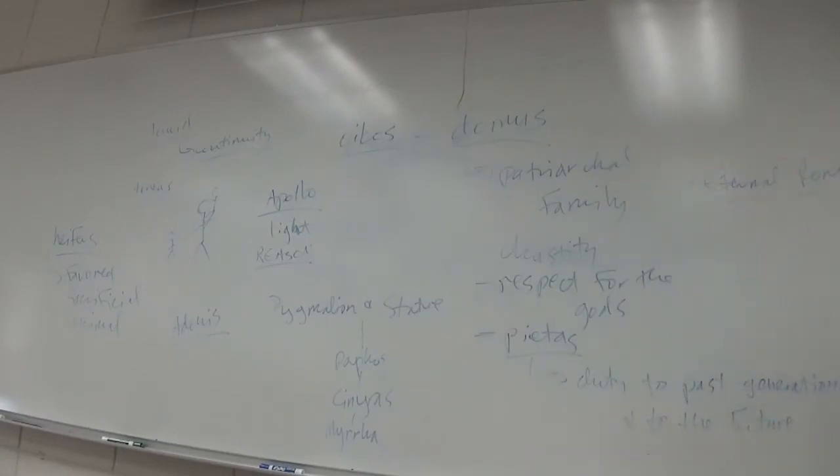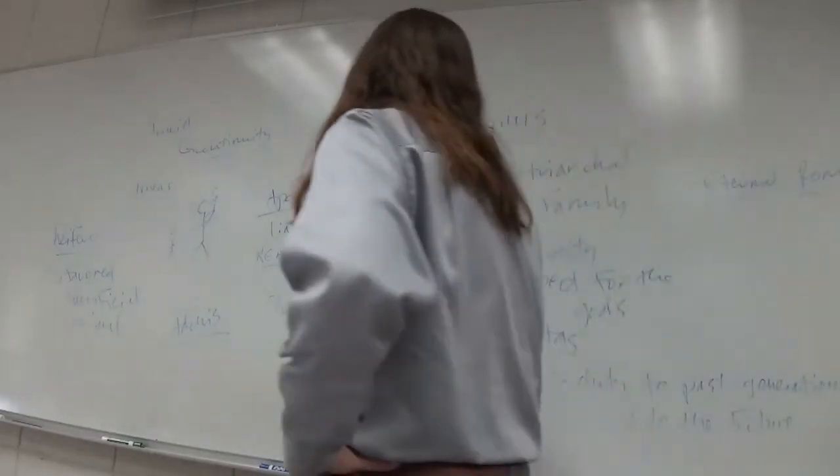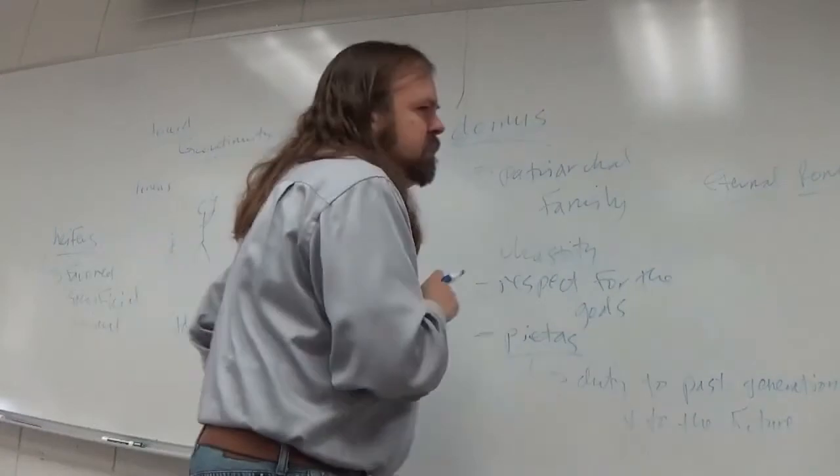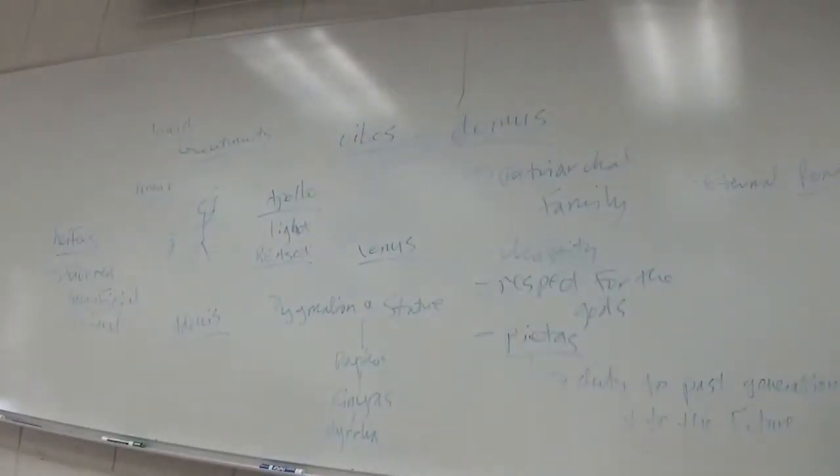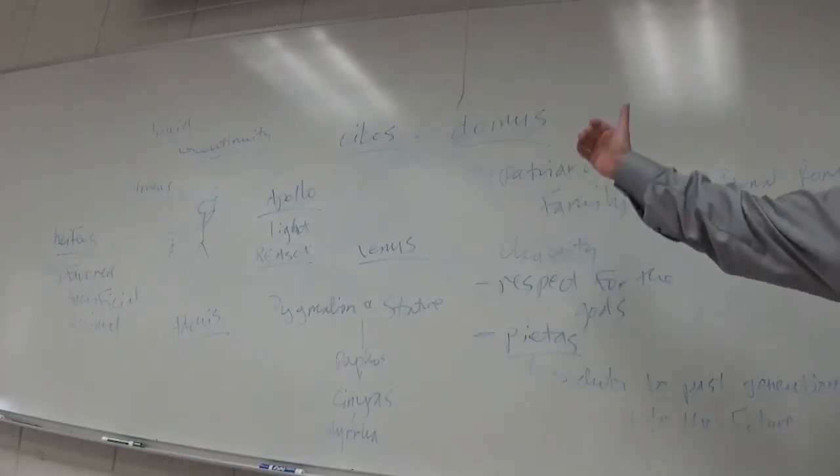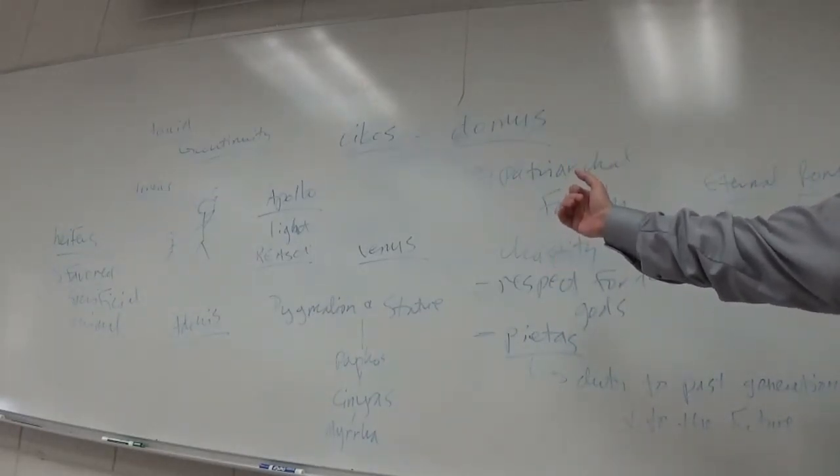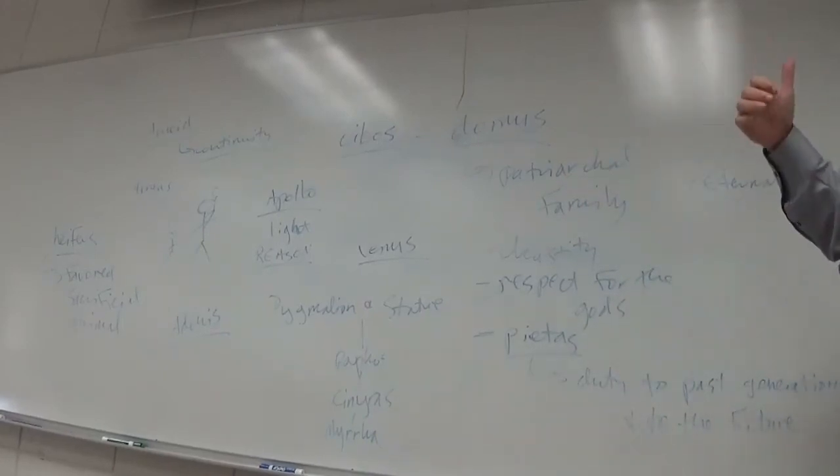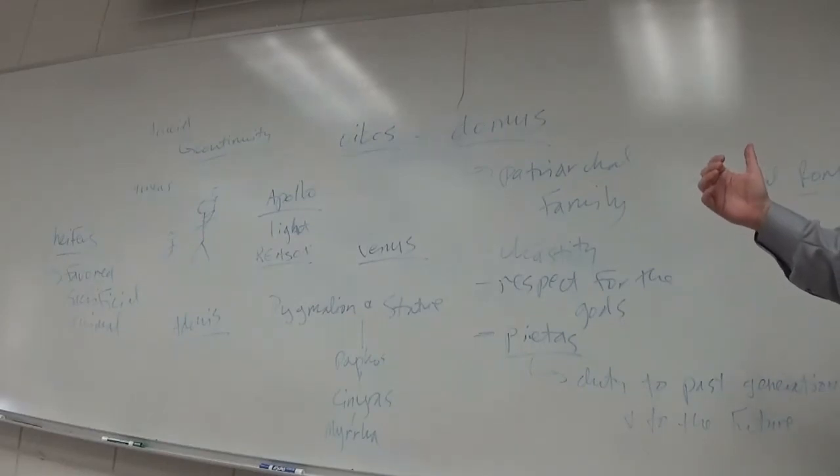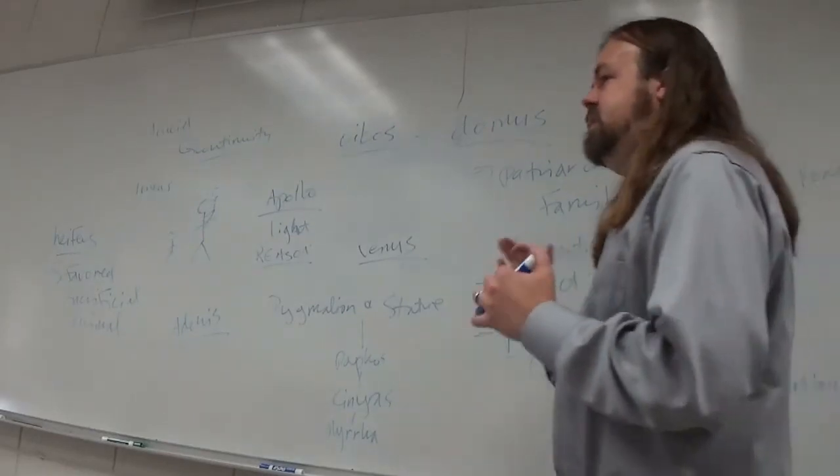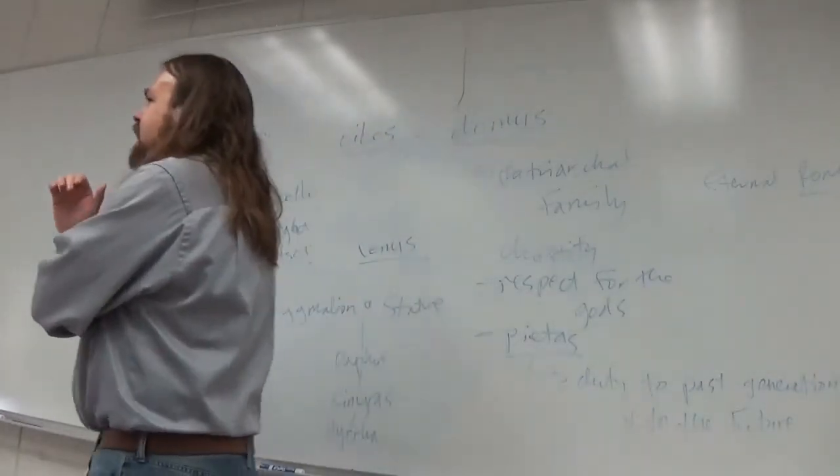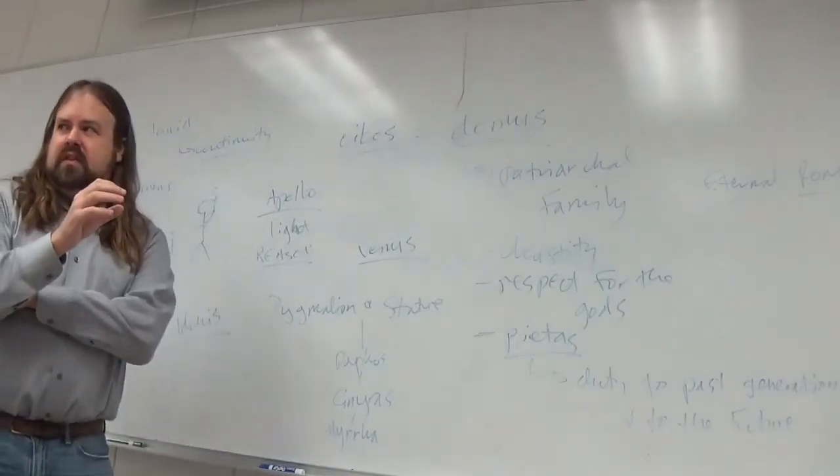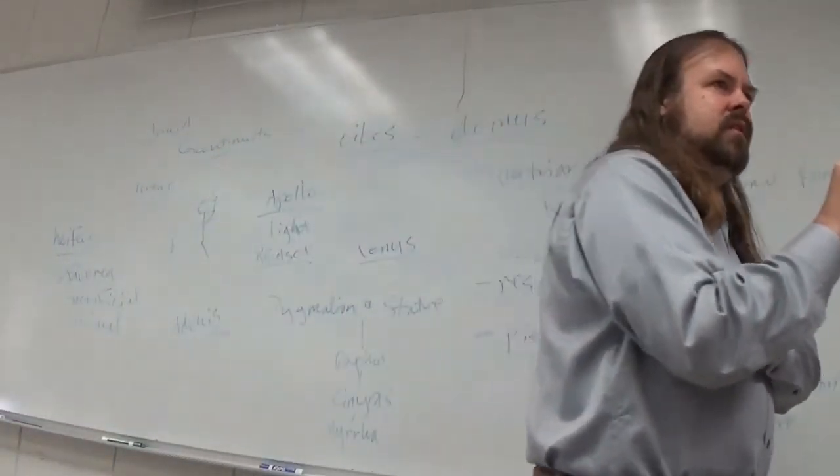And, ultimately, this is a rebuke to the goddess Venus herself. She made it happen, right? She gave Pygmalion the thing he wanted but shouldn't have had. And takes the fruit of it for herself a few generations later. And we get a lot of this kind of language about gods toying with and abusing mortals for their own pleasures throughout the epic.